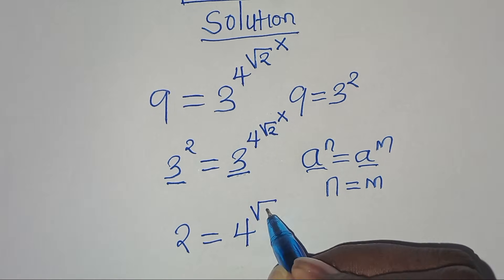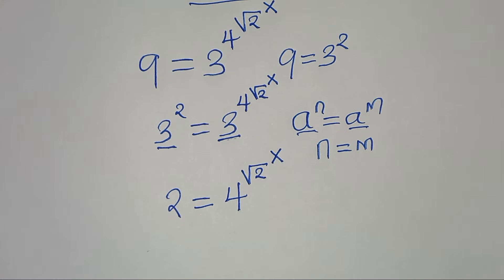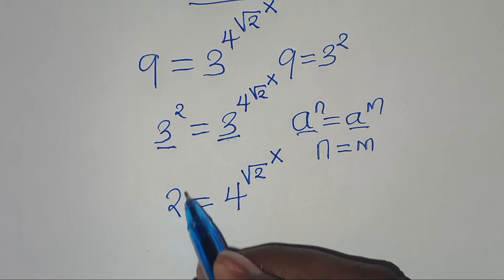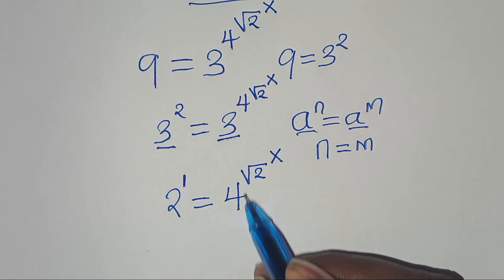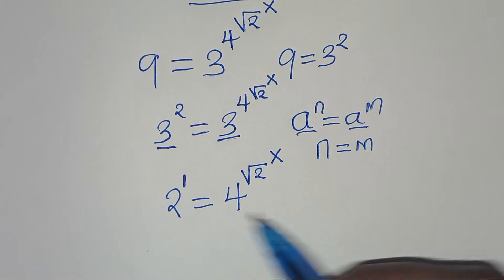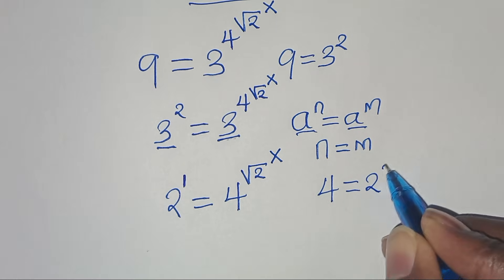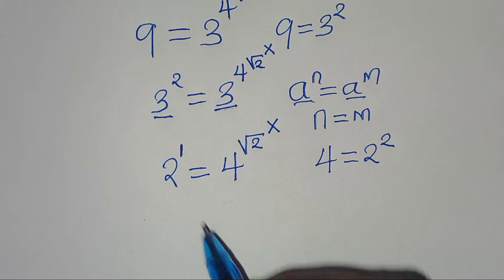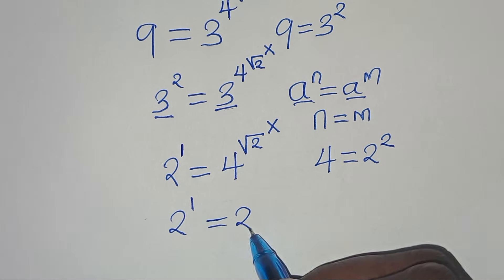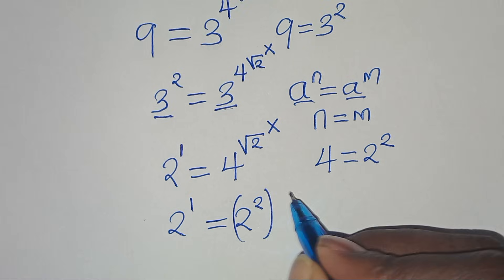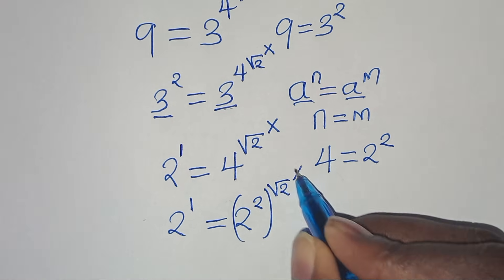The next step is that 2 is raised to the power of 1, and we can express 4 in terms of 2: 4 is the same as 2 to the power of 2. This implies we have 2 to the power of 1 equal to 2 to the power of 2, raised to the power of square root of 2, raised to the power of x.